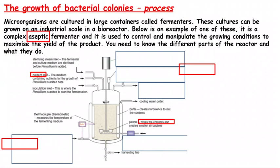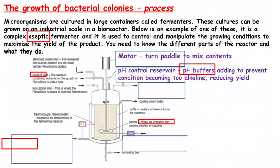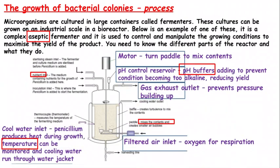Here is one of the fermenters — an example of it. The red boxes highlight the components from the mark scheme that we need to be aware of. We have a motor here which turns the paddle and mixes the contents up.